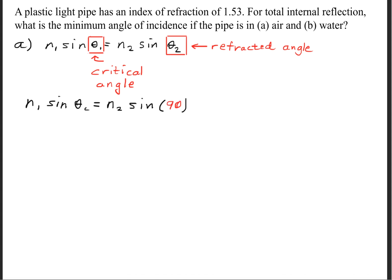We have N1 times sine of theta sub C, the critical angle, equals N2 times sine of 90. It has to be 90 degrees so that it totally internally reflects.